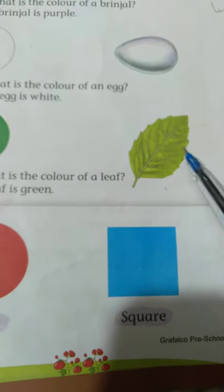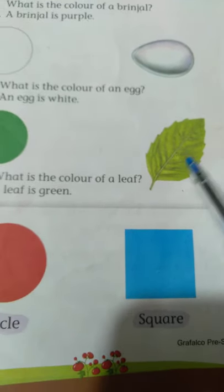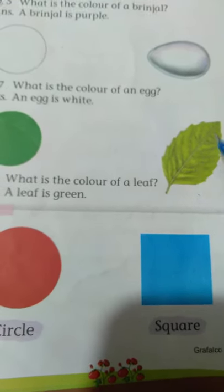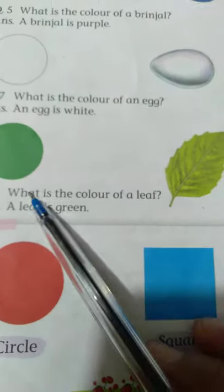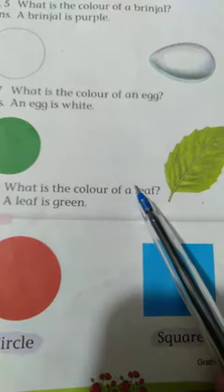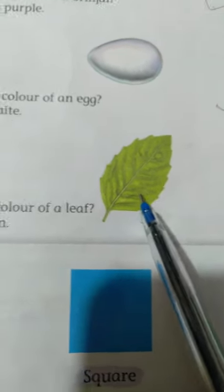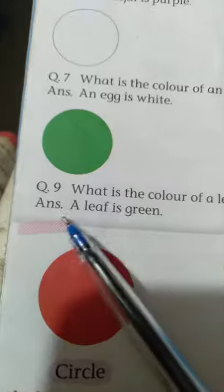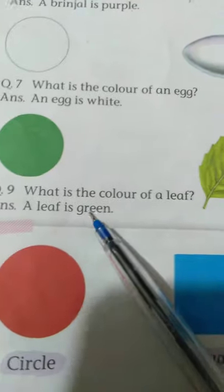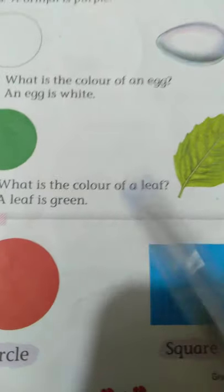Next is leaf. Leaf means patta. What is the color of a leaf? Look at the leaf carefully. A leaf is green.